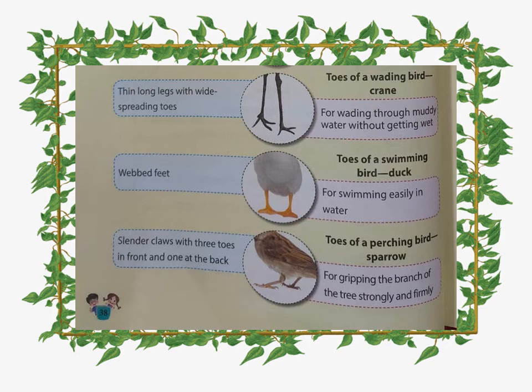Next one has thin, long legs with wide-spreading toes — these are the toes of a wading bird. An example of a wading bird is the crane. Such legs help the bird wade through muddy water without getting stuck, for a long time in search of prey.